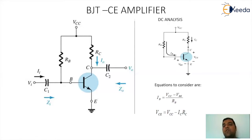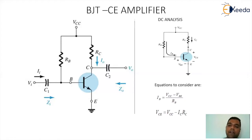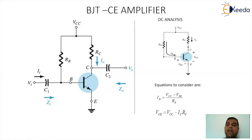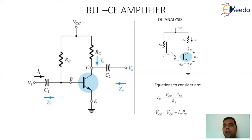When I apply KVL to the input loop, I can get the value of base current as (VCC minus VBE) divided by RB. When I apply KVL to the output loop, I get the value of VCE as VCC minus IC·RC. I can get IC as beta times IB, which helps in calculating the AC parameters or components of the small signal AC model. We can go for the RE model, hybrid model, or hybrid PI model to get the device parameter values.